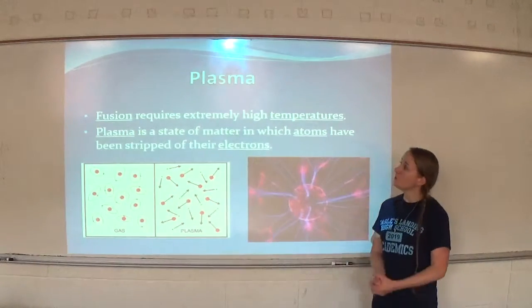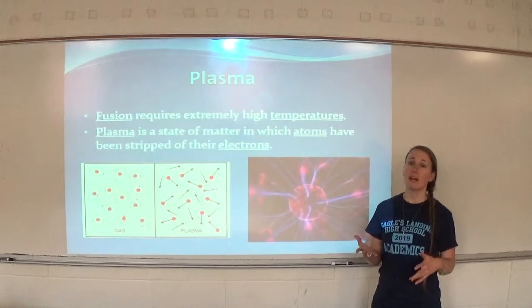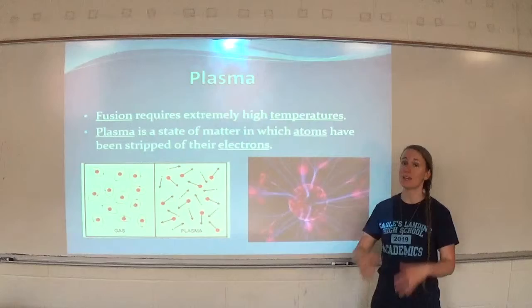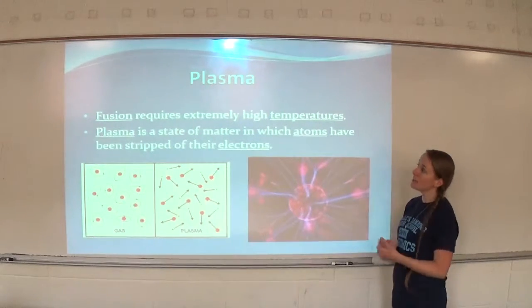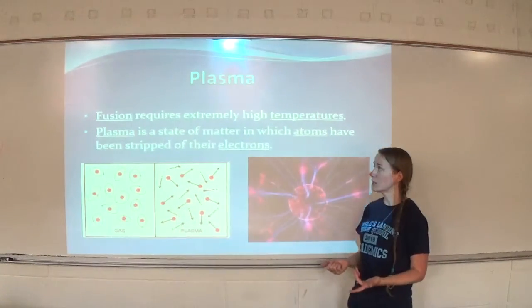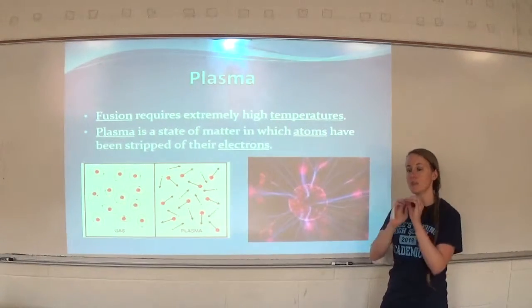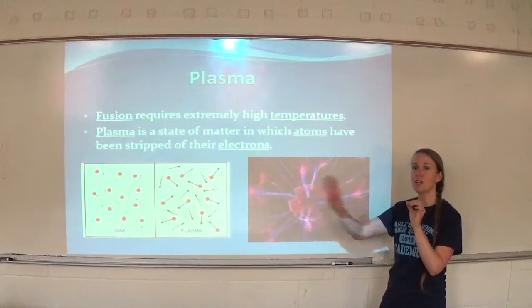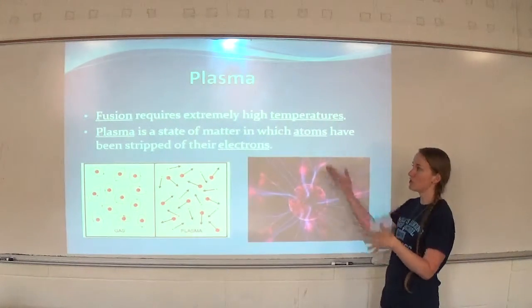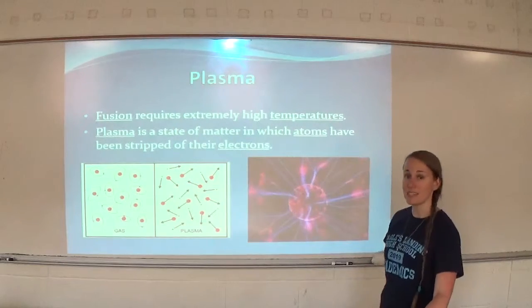Fusion requires extremely high temperatures. Plasma is the state of matter in which atoms have been stripped of their electrons. When temperatures are so high that the electrons release from the atoms, you're left with positive ions and electrons. We talked about plasmas briefly when we talked about the states of matter.